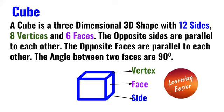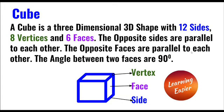A cube is a three-dimensional shape with 12 sides, 8 vertices, and 6 faces. The opposite sides are parallel to each other. The opposite faces are parallel to each other. The angle between two faces is 90 degrees.